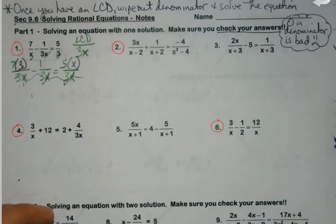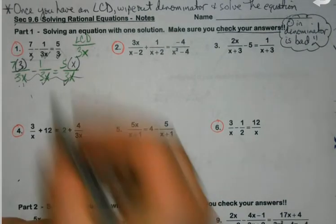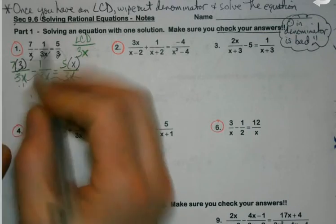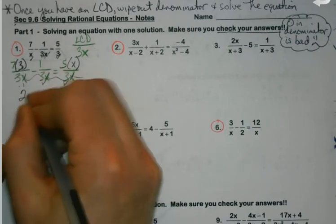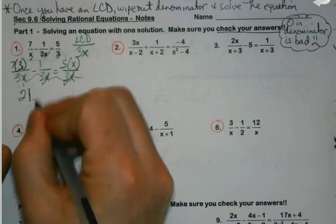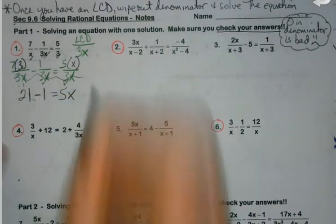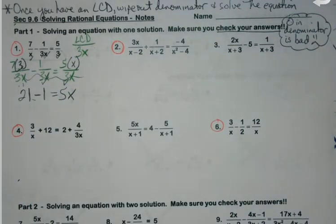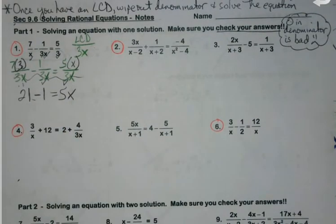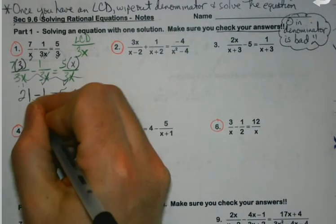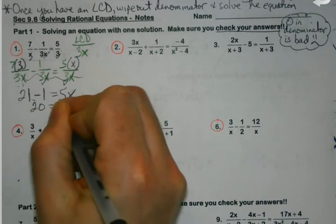Once you've built your fractions, the denominator at this point has done its job. It will now go away. Because basically what my next step would be, it would be to multiply through by that. So here, 7 times 3 would be 21 minus 1 equals 5x. So the denominator only helps us to get our new fractions built, to get our new numerators, then it's gone. And we solve what's left.